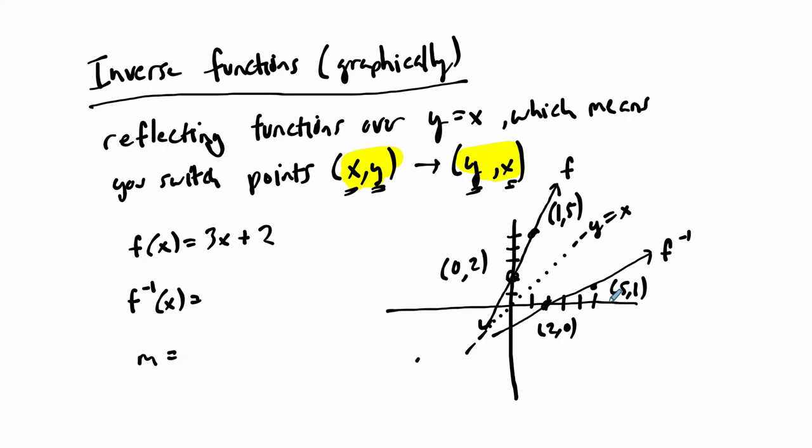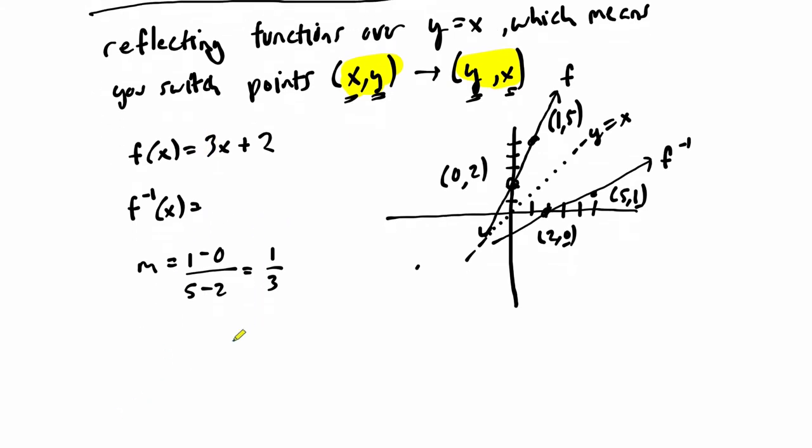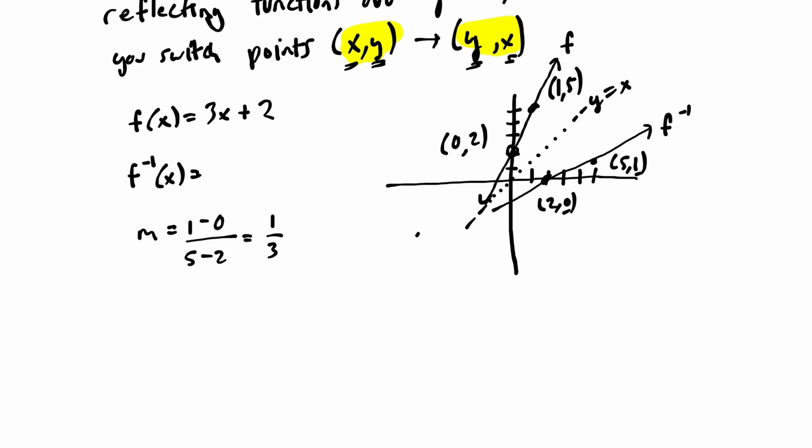So the slope would be, what would that be? Rise, 1 minus 0, over run, 5 minus 2. So 1 over 3. So it's a third. I like that because it looks like 3, but the reciprocal, maybe there's something to that. I'm going to write it in y equals mx plus b form. I already know that my slope is a third. I don't know x and I don't know b. So let's solve that. An easy way to figure out the b value or y intercept is to plug in a point that you have here. I'll plug in 2, 0, and then you can solve for it.